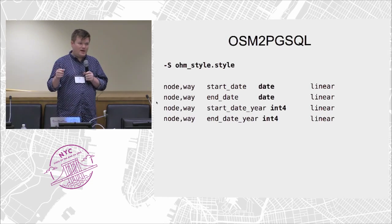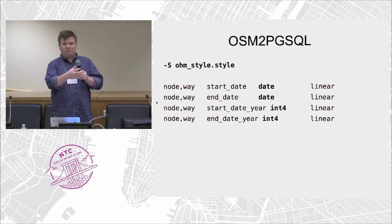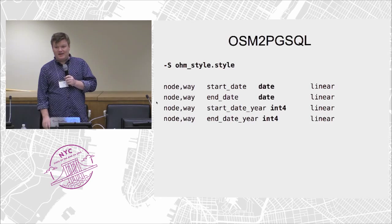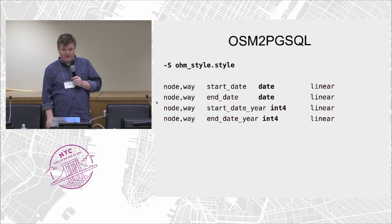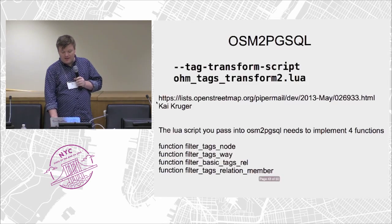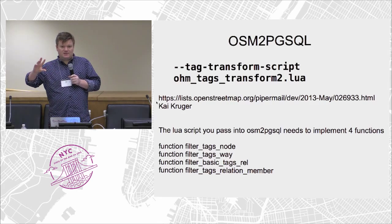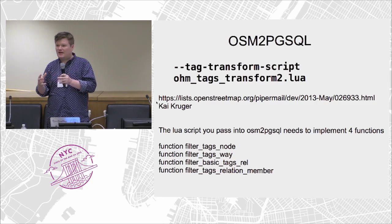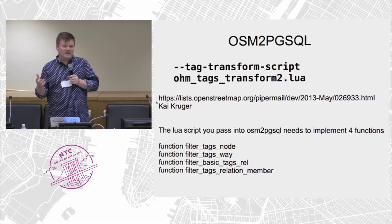The style is where we choose the tags from the OSM database to put into the map rendering database. Here we choose start_date and end_date as a date type that PostgreSQL can store. Kai Kruger developed this system — it uses Lua scripting language to transform tags. It passes all the tags and can transform them, merge things together if need be — like bridge:name and bridge:colon:name — which can make your maps quicker.